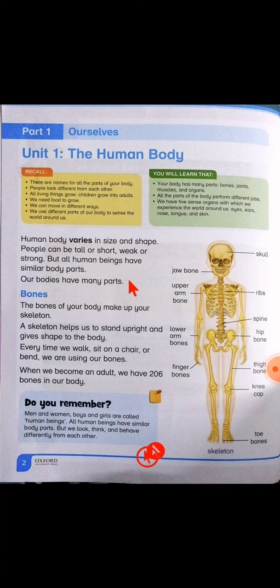Next line — Bones. The bones of your body make up your skeleton. A skeleton helps us to stand upright and gives shape to the body. بیٹا، ہماری bones سے مل کے ہمارا skeleton بنتا ہے، اور skeleton جو ہے وہ ہماری body کو کھڑا رکھتا ہے اور ہماری body کو shape بھی دیتا ہے۔